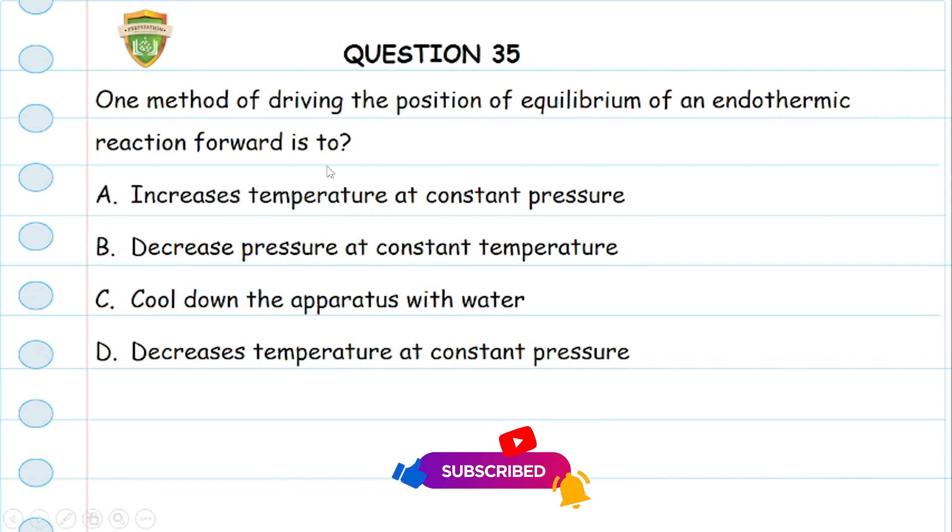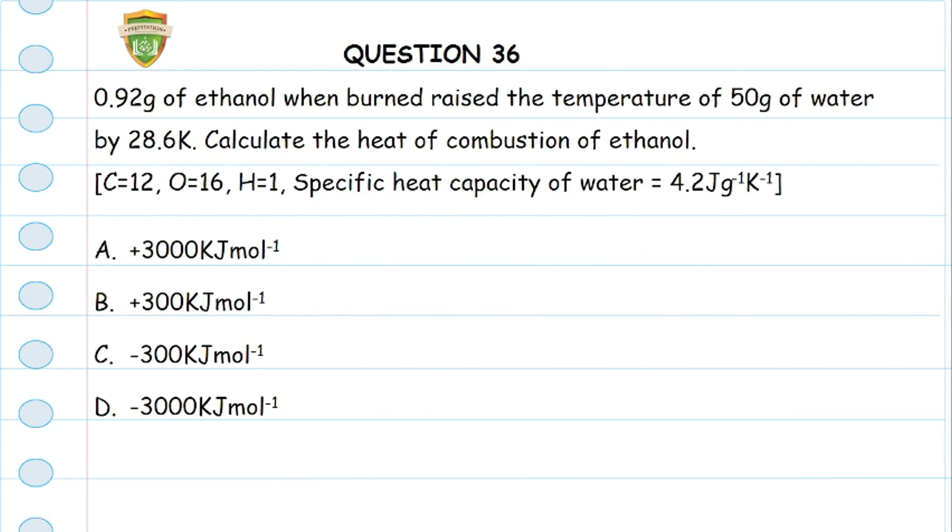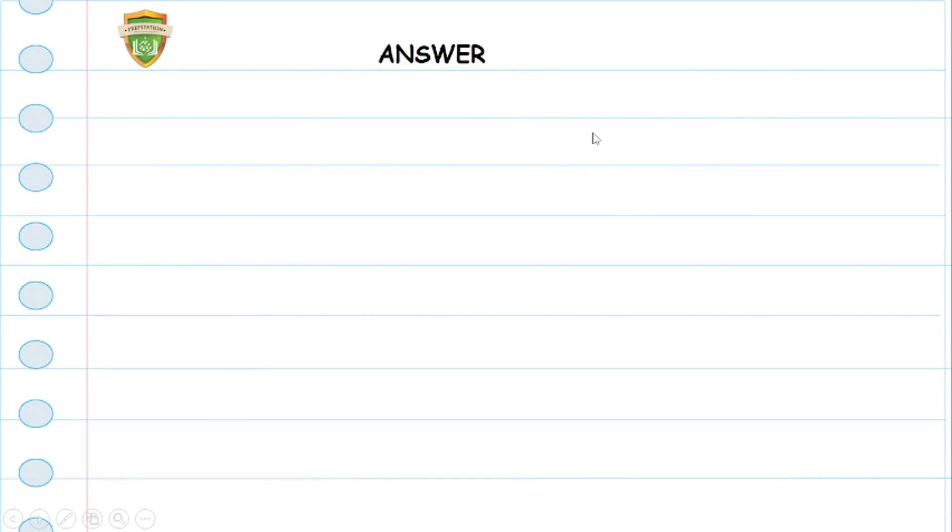Question 36: 0.92 grams of ethanol when burned raised the temperature of 50 grams of water by 28.6 Kelvin. We are to calculate the heat of combustion of ethanol. We are given the atomic number for carbon to be 12, for oxygen to be 16, for hydrogen 1, and the specific heat capacity of water to be 4.2 joules per gram per Kelvin. Notice this is in grams, so we don't have to change to kilograms.